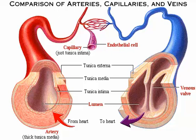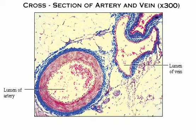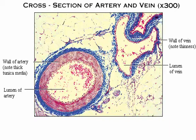Capillary walls consist of just a thin tunica intima, making them ideally suited for their role: the exchange of materials between the blood and interstitial fluid. Veins are farthest from the heart and so they experience the least pressure. Their walls are thinner than arterial walls and their lumens are larger, allowing them to accommodate a large volume of blood. The tunica externa is the heaviest wall layer in veins. This photomicrograph shows an artery and a vein side by side — note the thick tunica media in the artery and the thin walls of the vein.